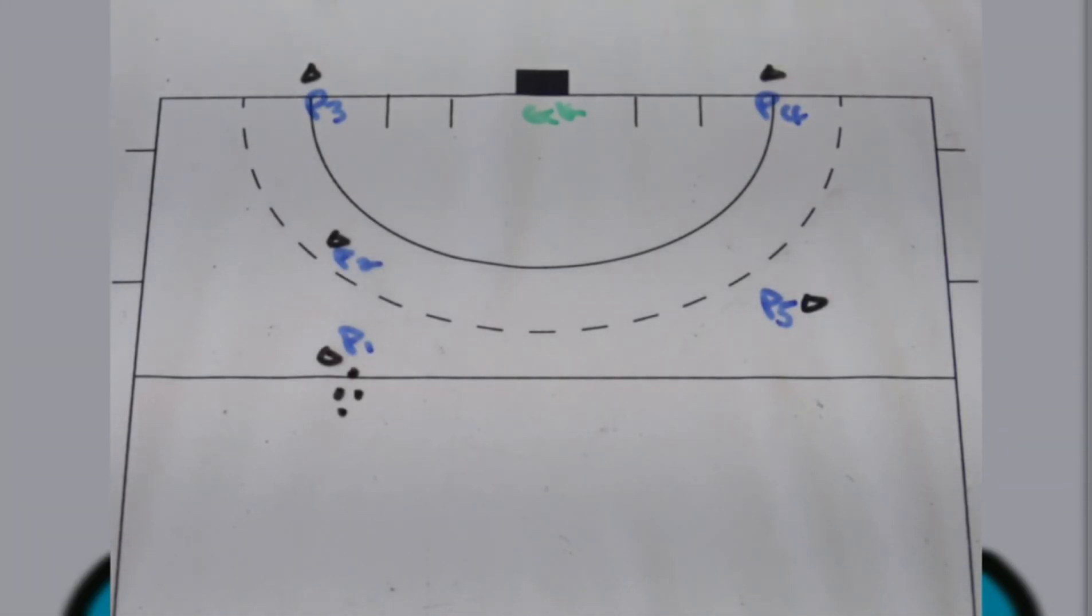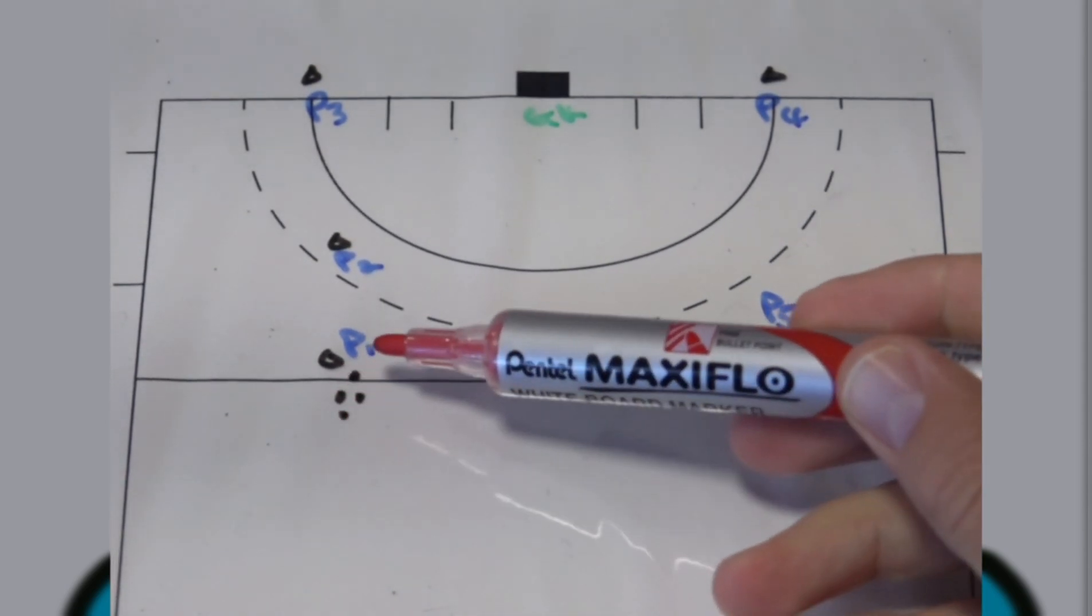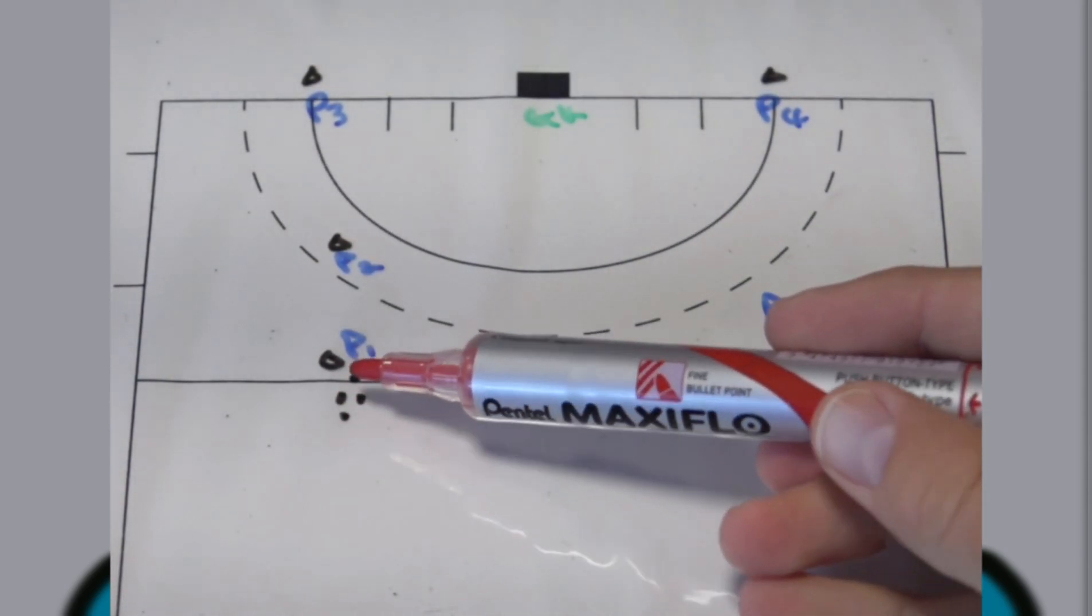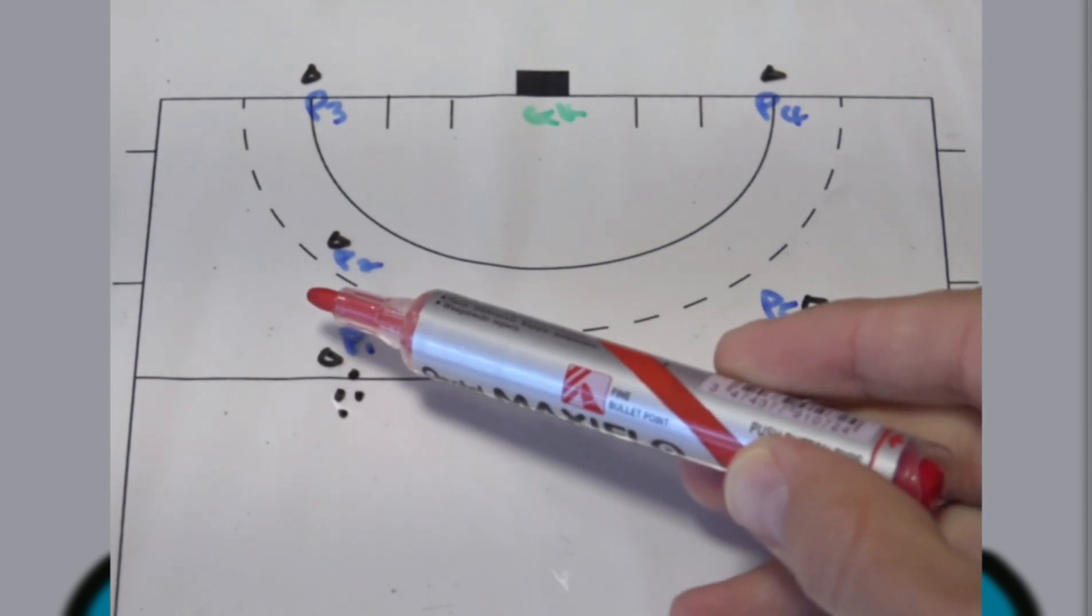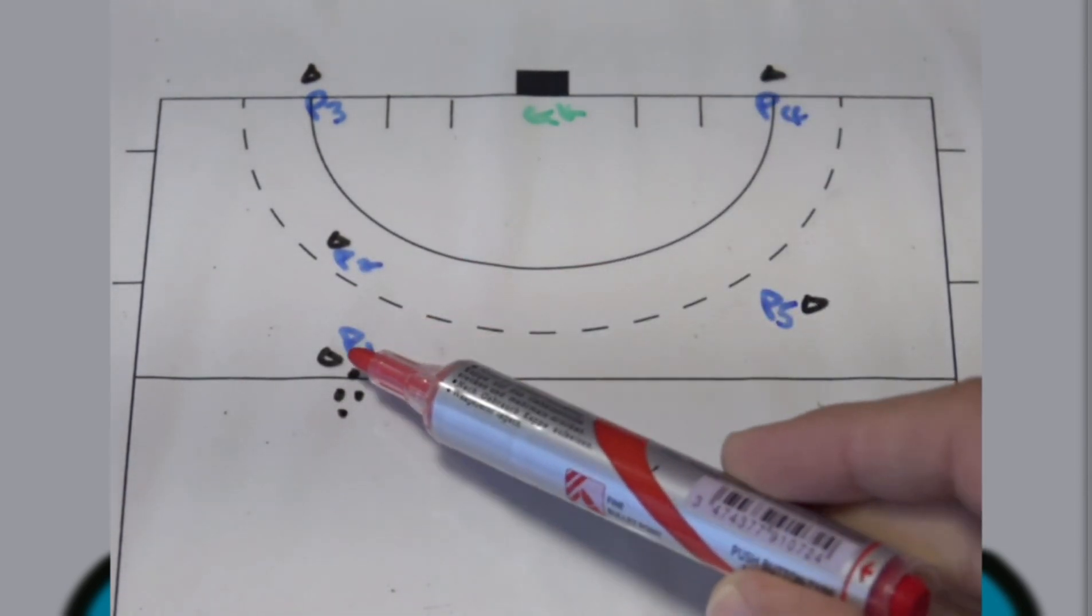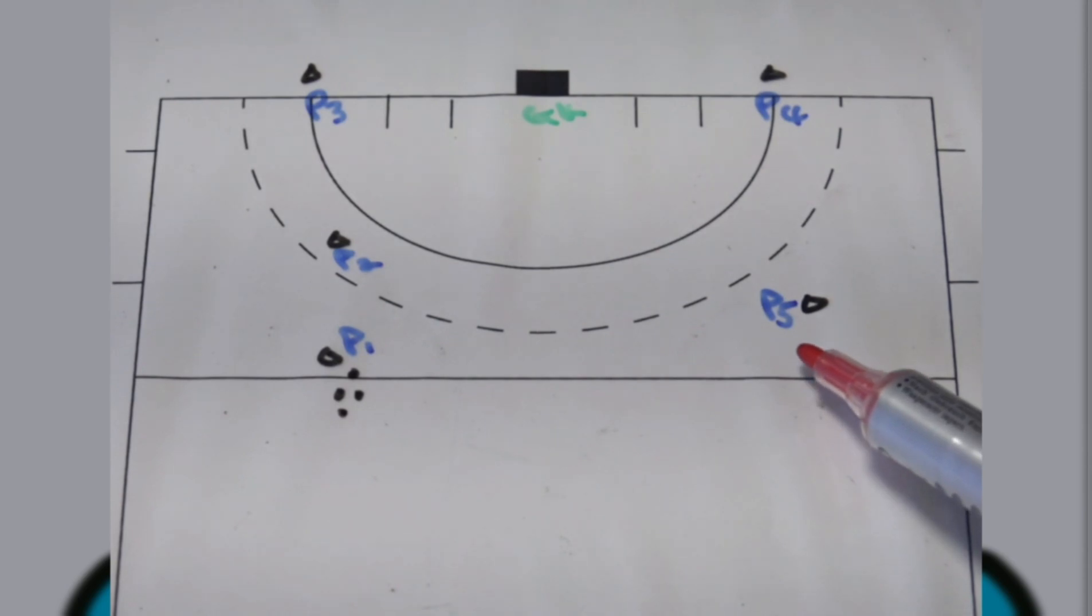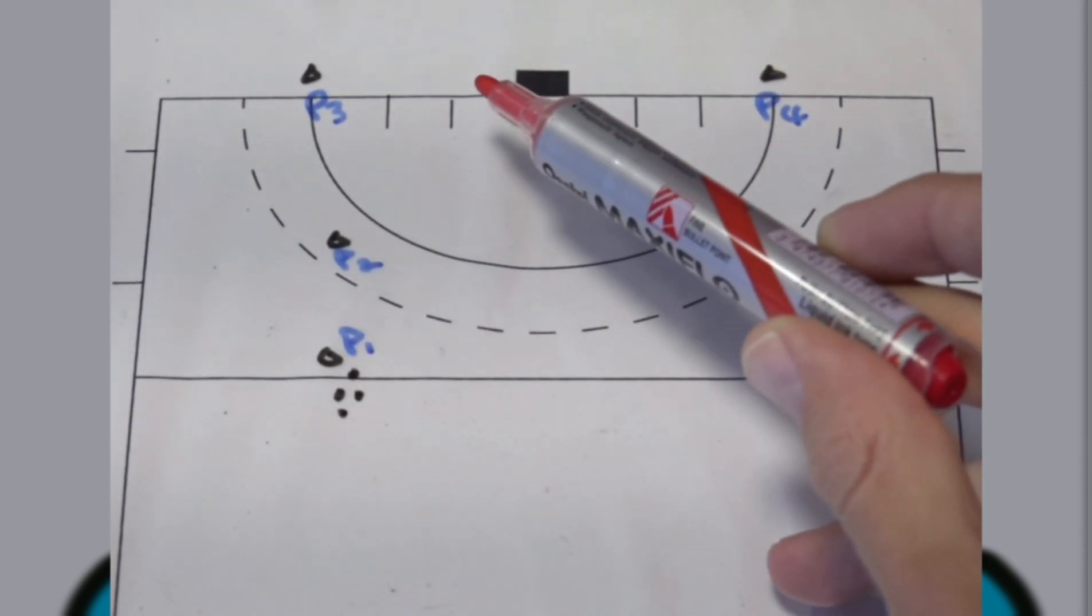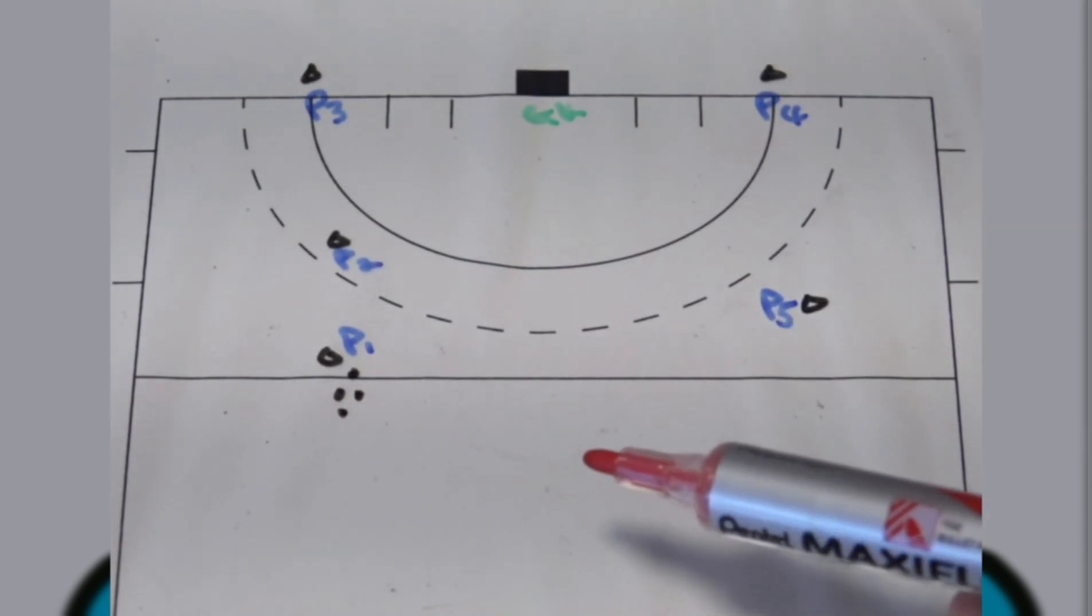So with this build-up drill as you can see we're starting from this side, but you as a coach can firstly either just do the one side for a couple of rounds and then put all the balls on this side and do the other side entry for a couple of rounds as well.